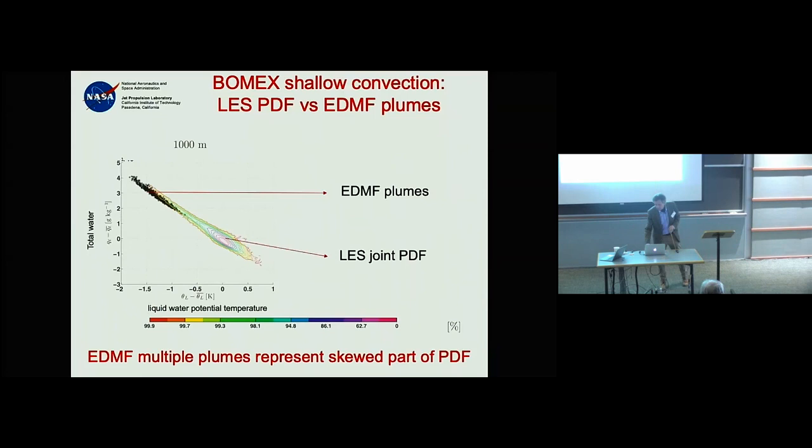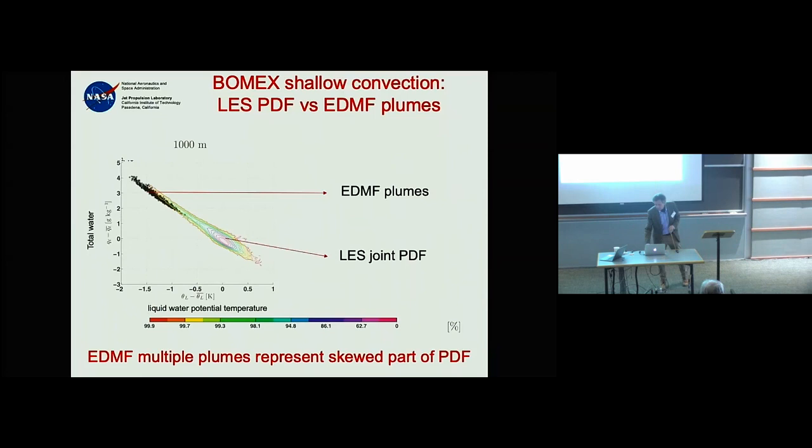Now, as a final topic on unified boundary layer–convection schemes: we want to extend the approach to all types of convection — not just the boundary layer and shallow convection, but also deeper convection, which is a much more difficult problem.